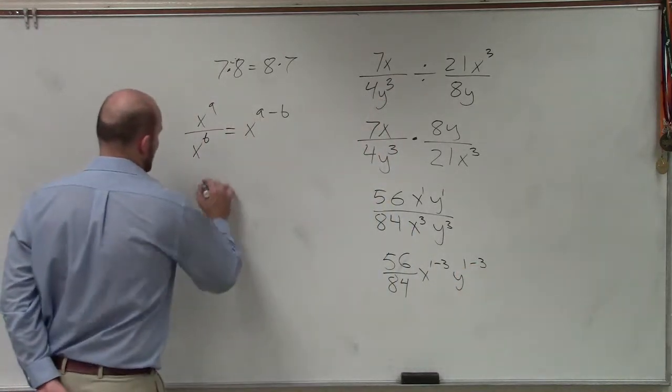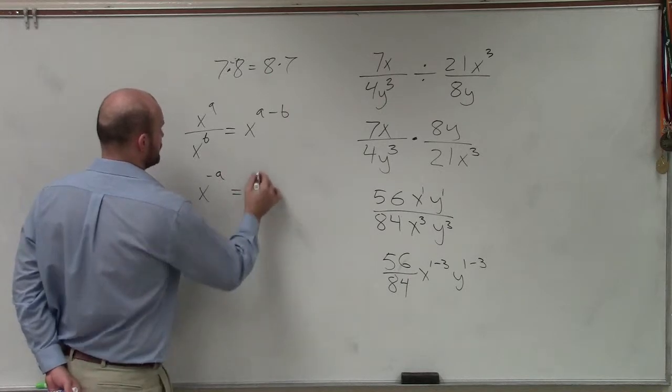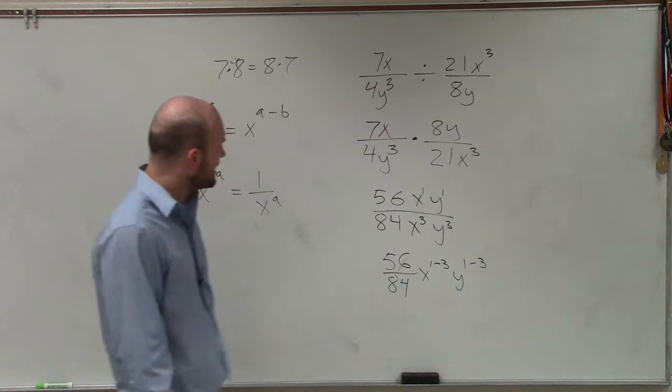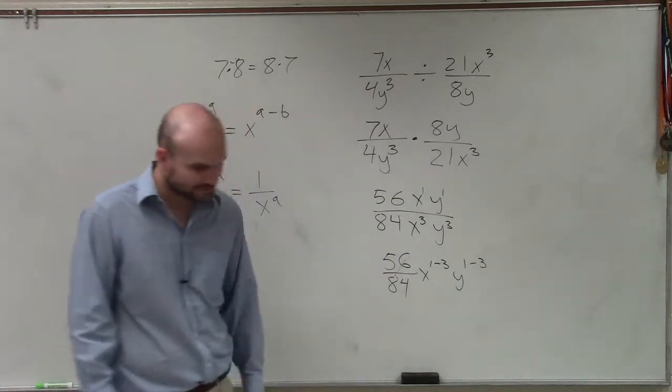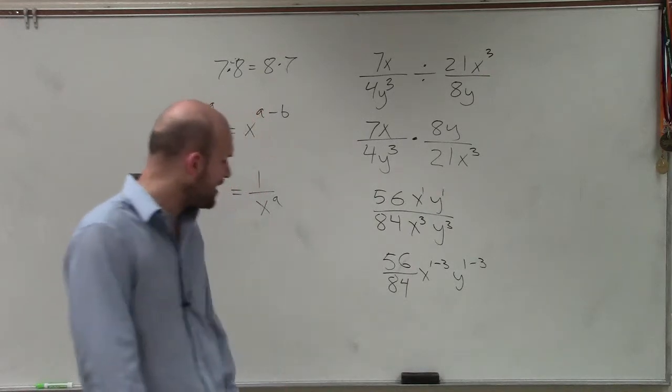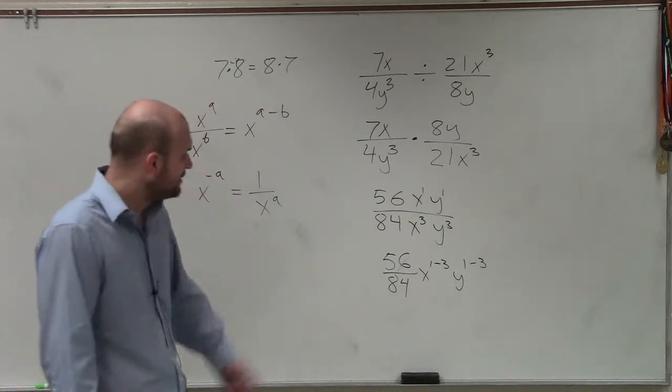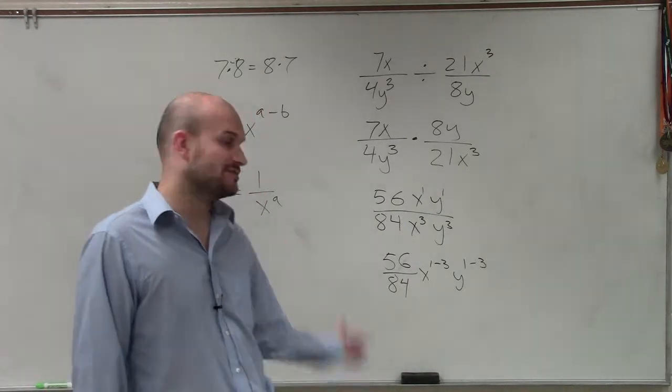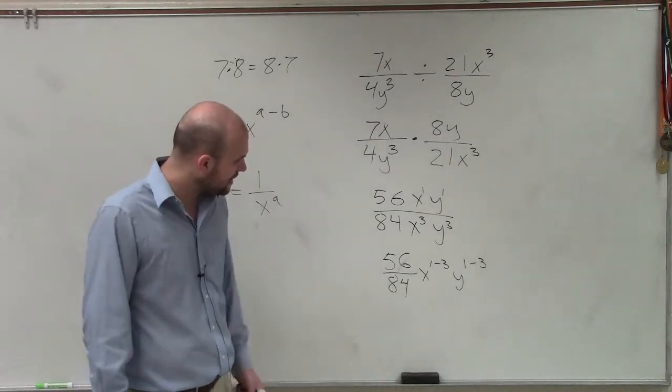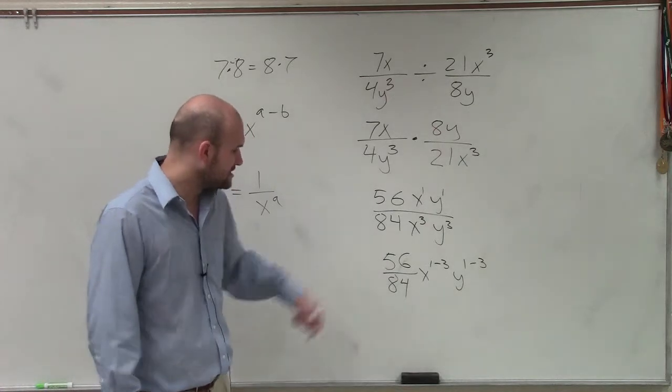And then remember, if I have x to the negative a, that equals 1 over x to the a. Now the next thing is, I want to be able to simplify this and see how I can rewrite these terms. What do they have in common that I might be able to take out?